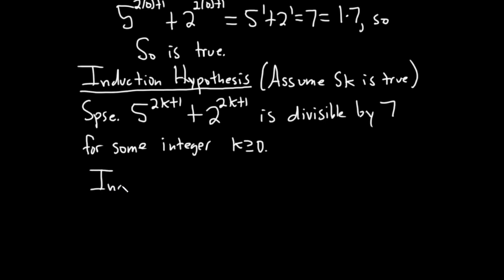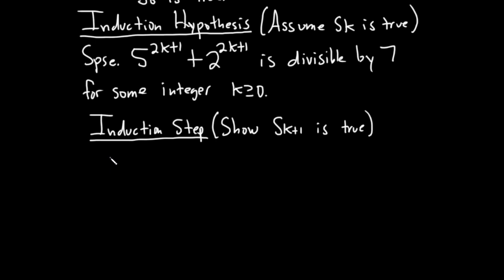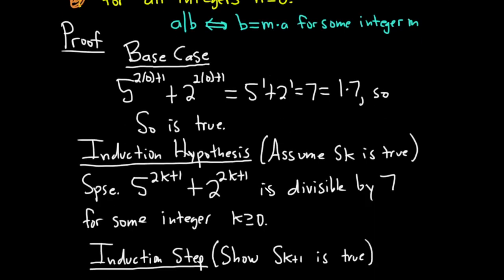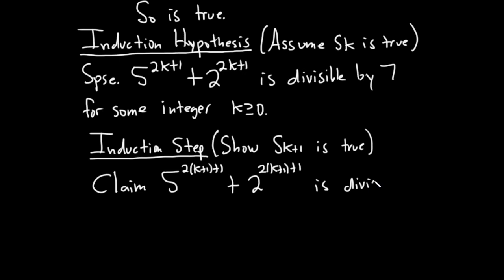The next step is called the induction step. In this step, we have to show that our statement is true when n equals k plus 1. So we have to show S sub k plus 1 is true. The claim is that 5 to the 2 times (k plus 1) plus 1, plus 2 to the 2 times (k plus 1) plus 1, is divisible by 7. That's what we have to show.